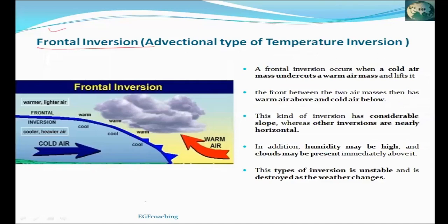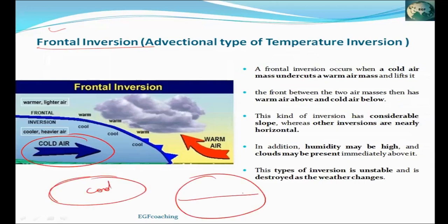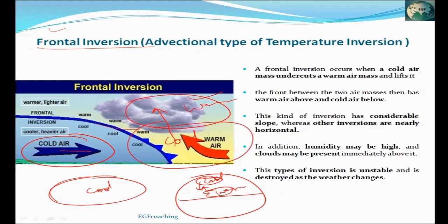The fourth type is frontal inversion. This occurs when two air masses meet — one cold and one warm. Warm air from the tropical region rises over the denser cold air from the polar region. The result is warm air sitting above cool air, which is an inversion condition.